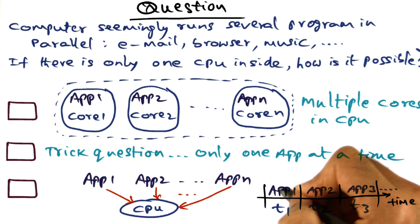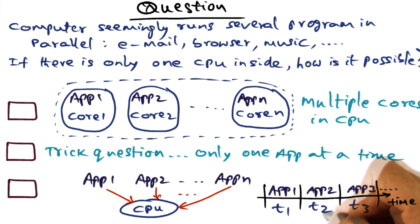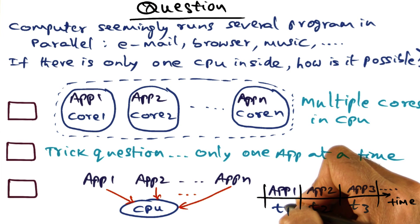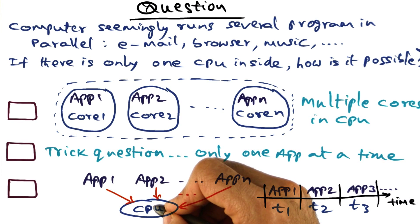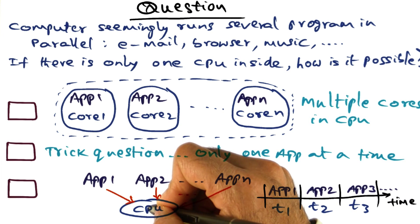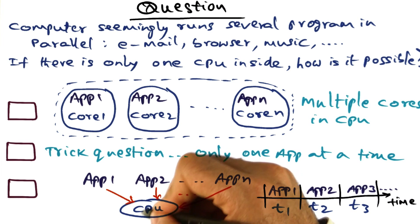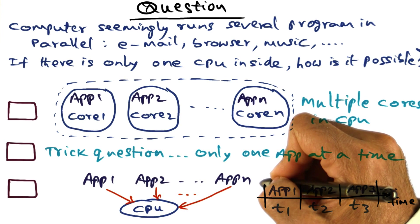For instance, in time unit T1, application one is running; in time unit T2, application two is running, and so on. This is what makes it appear as though there are several programs running on the CPU simultaneously. What is going on is that the operating system is multiplexing the CPU among these applications.